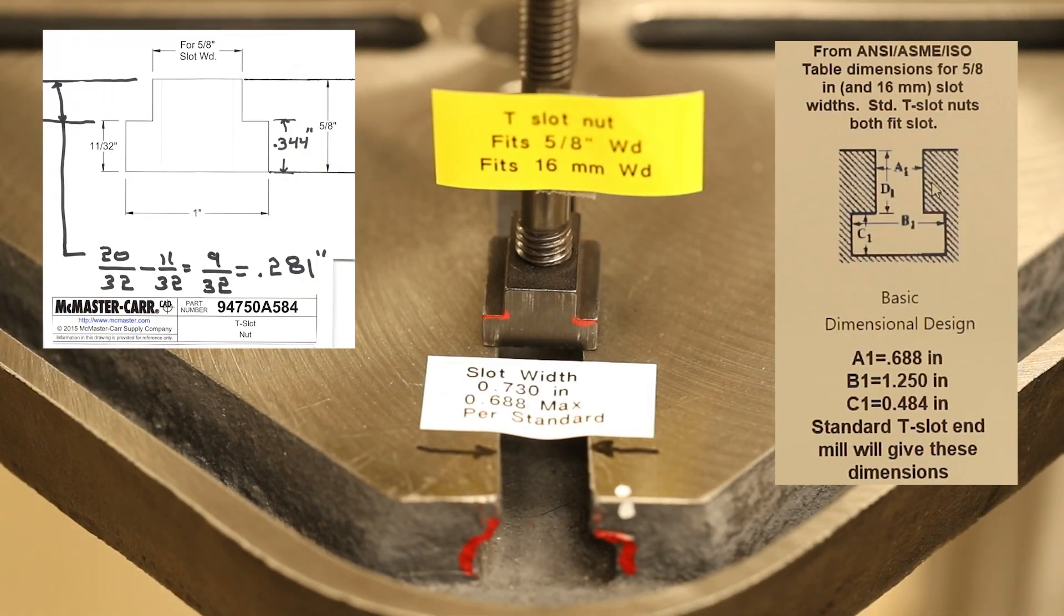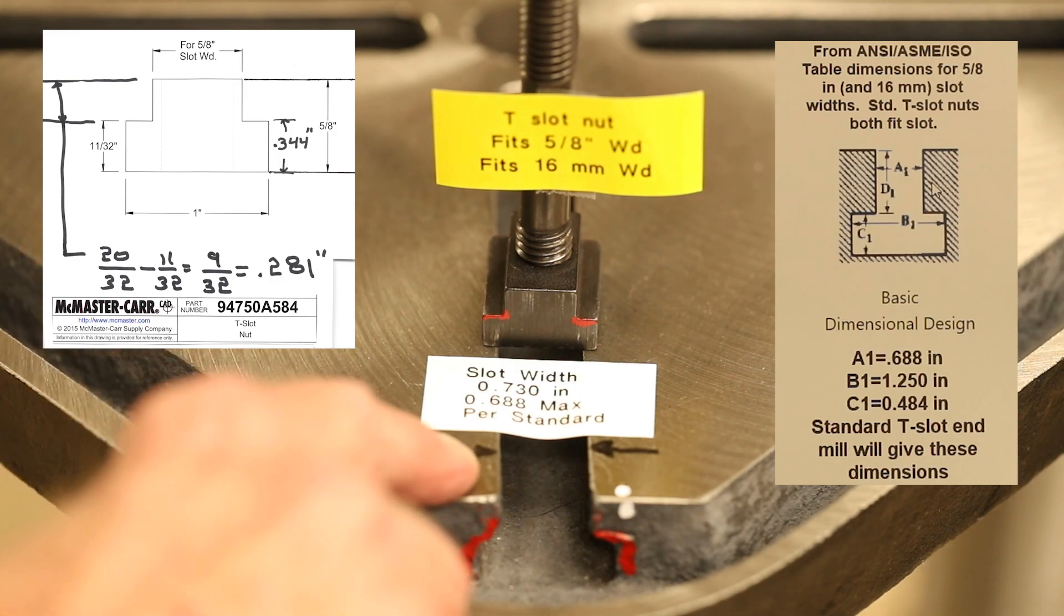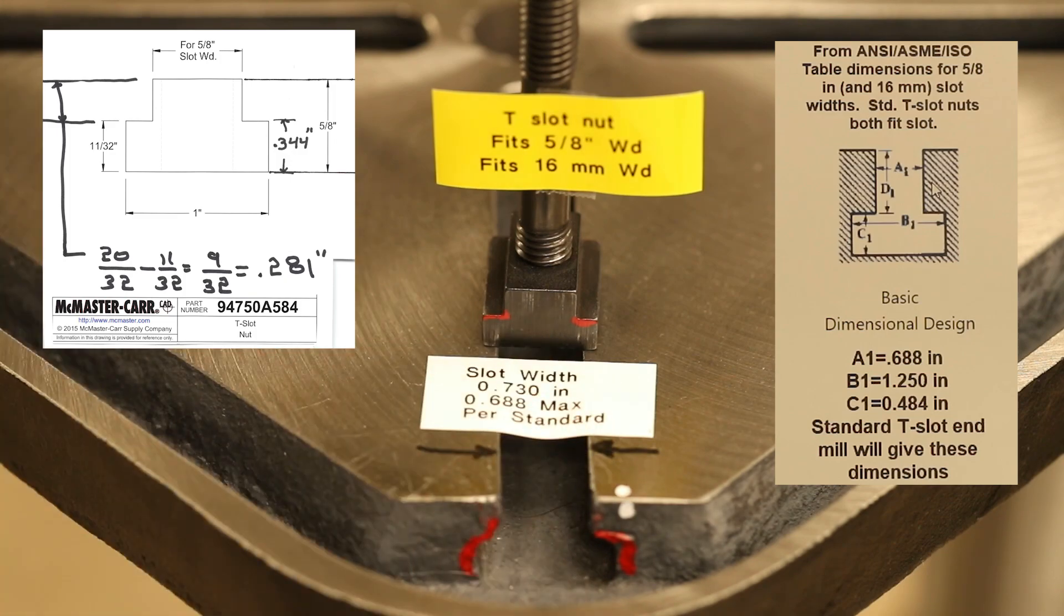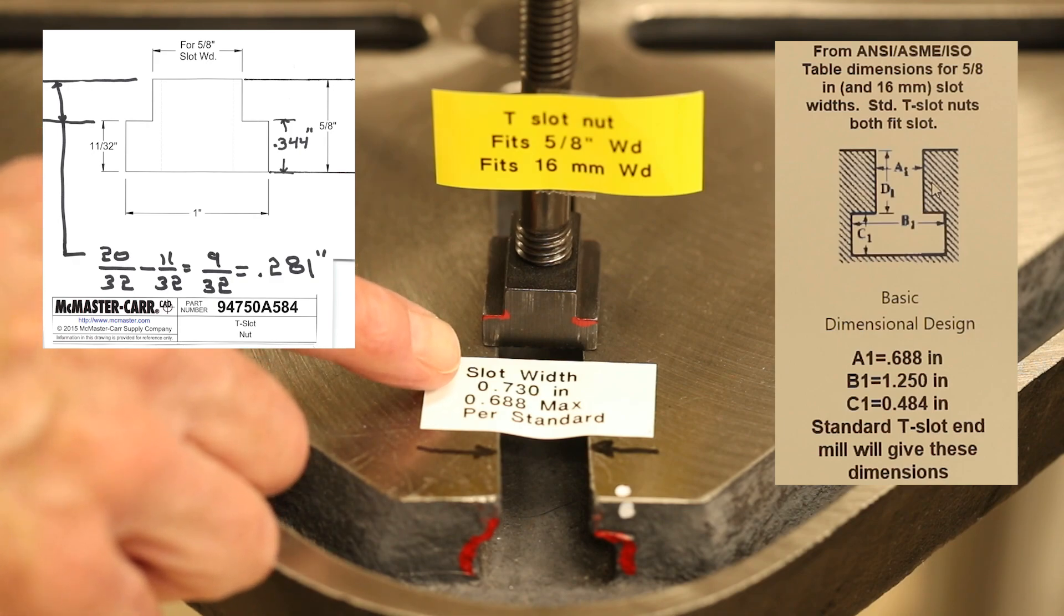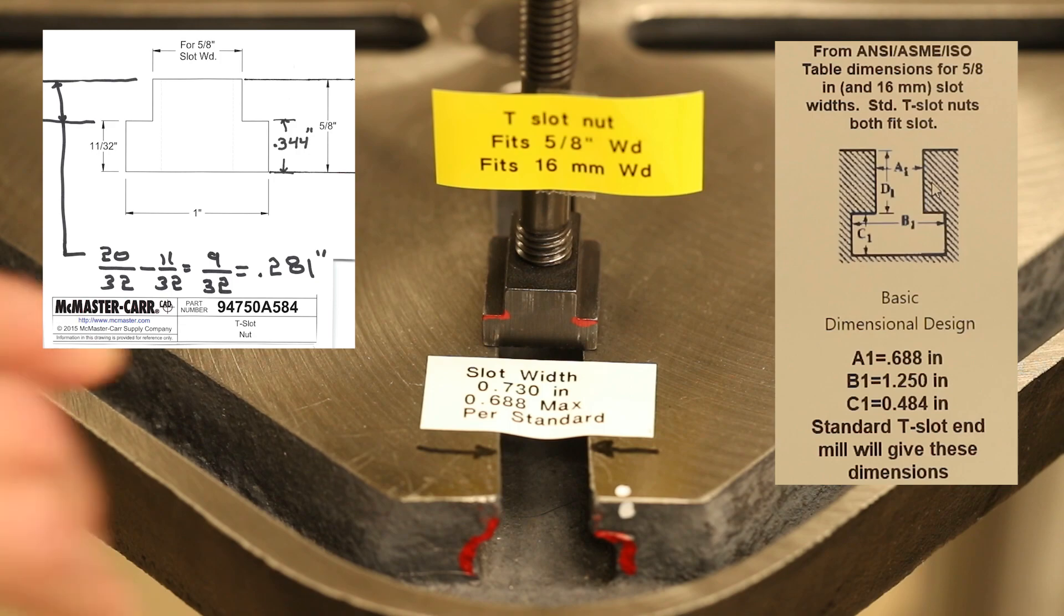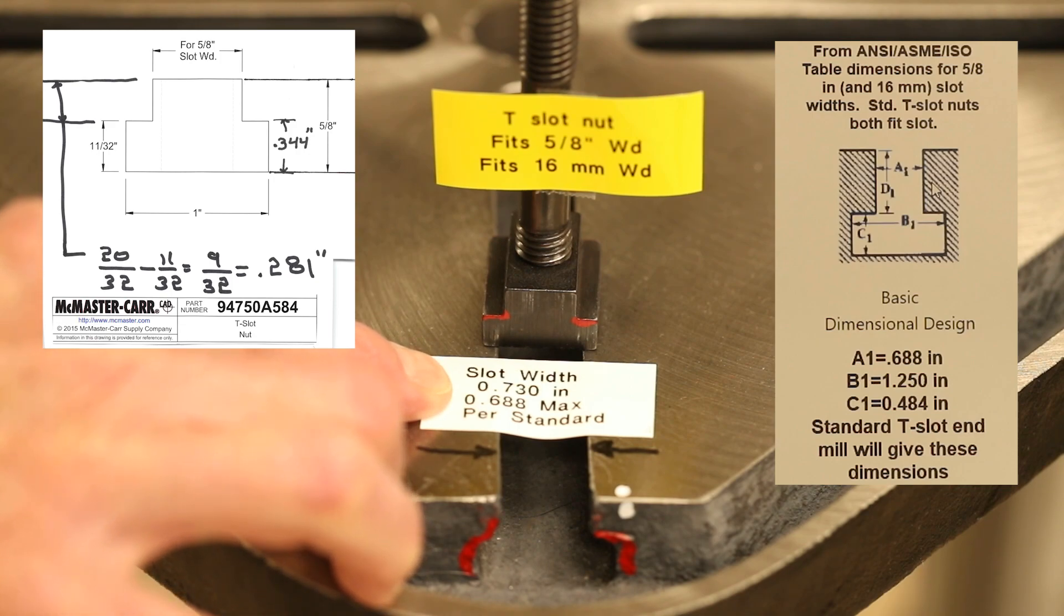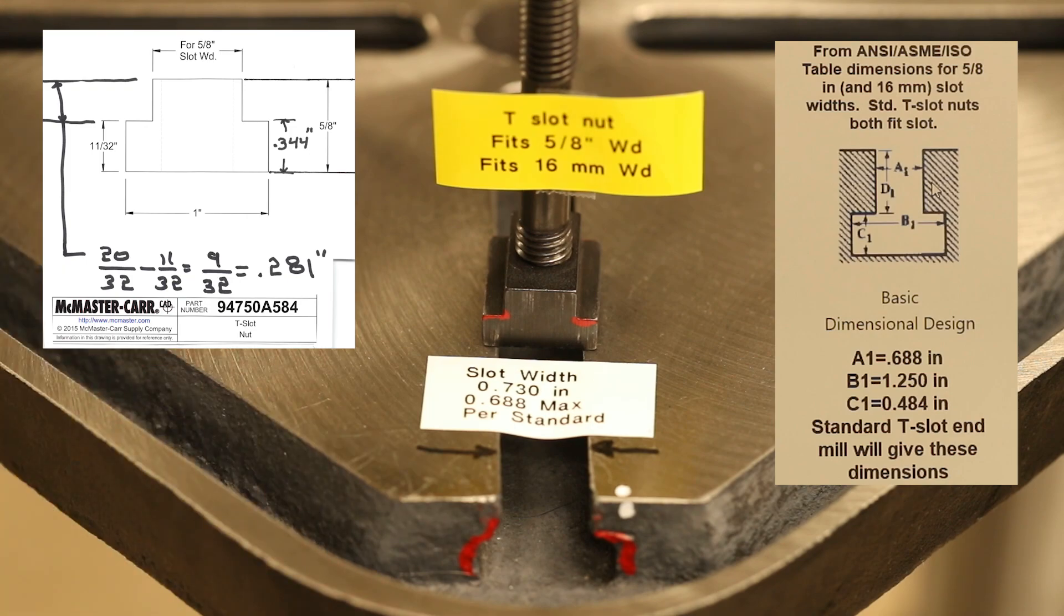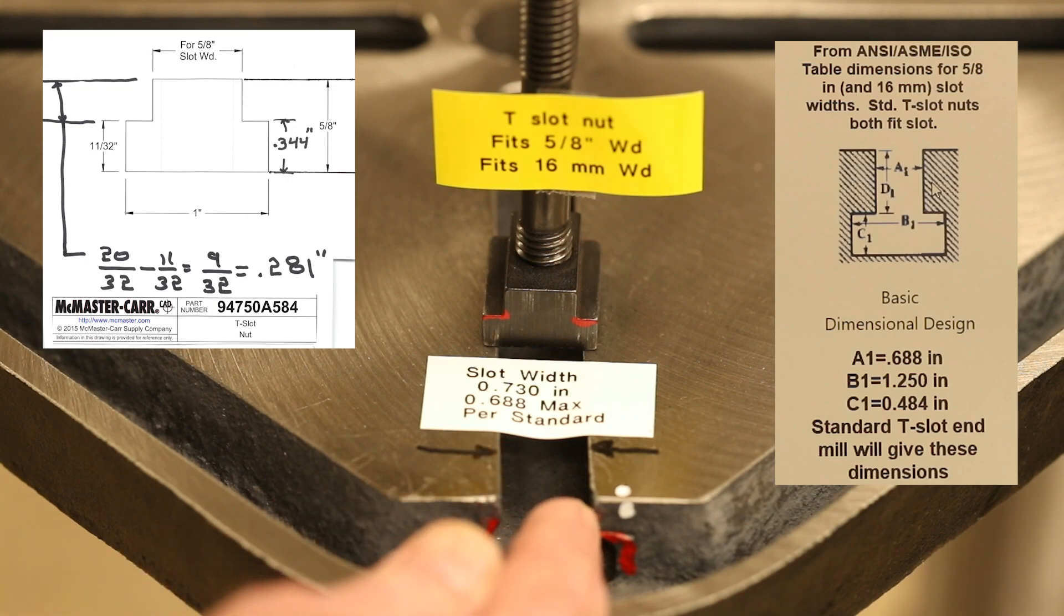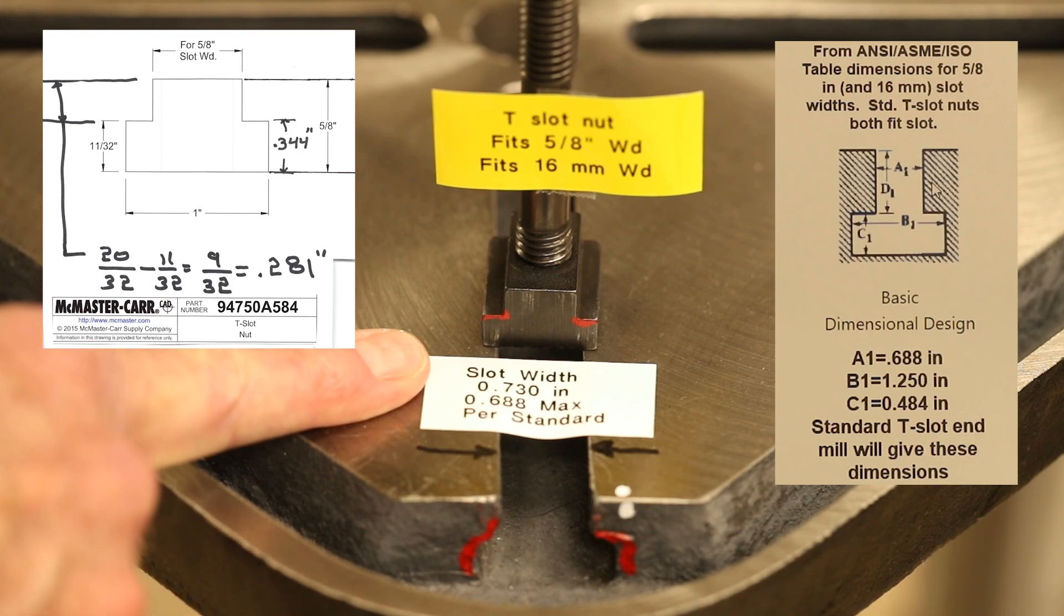I also wanted to show that there is one other correction that needs to be made to the table. The width of the slot on all four slots on both tables that I've received is 0.730 inches. The standard calls for the maximum size of that width to be 0.688 inches.